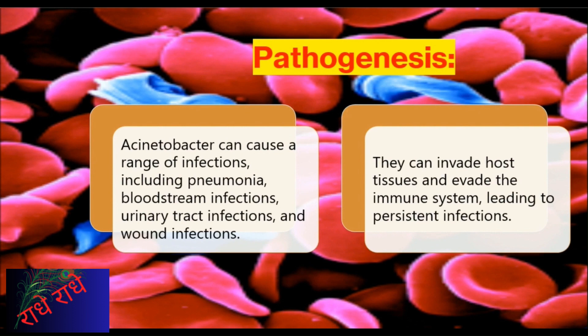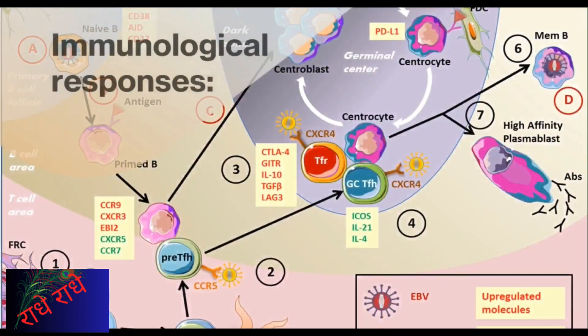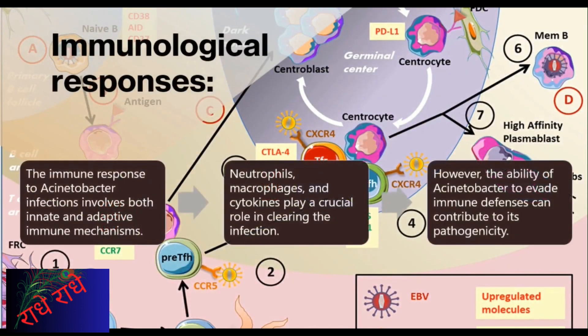Pathogenesis is the scientific investigation of the biological mechanisms that can result in disease. Through increased comprehension of pathogenesis, it is possible to pinpoint potential cures. Our immune system relies on neutrophils, macrophages, and cytokines to clear Acinetobacter infections, yet the bacterium has the ability to evade our immune defenses, rendering it highly pathogenic. To better comprehend Acinetobacter's successful evasion of our defenses — making the infection exceedingly complex — it is important to understand the mechanisms by which it operates.